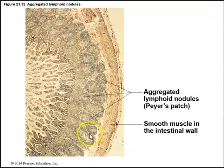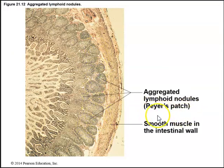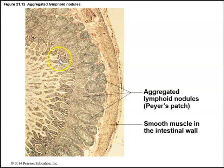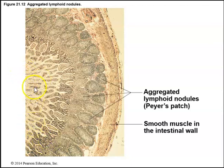Here we see the aggregated lymphoid nodules — Peyer's patches — in the distal small intestine, along with the smooth muscle in the intestinal wall, the epithelial layer of the intestine, and the centralized lumen.